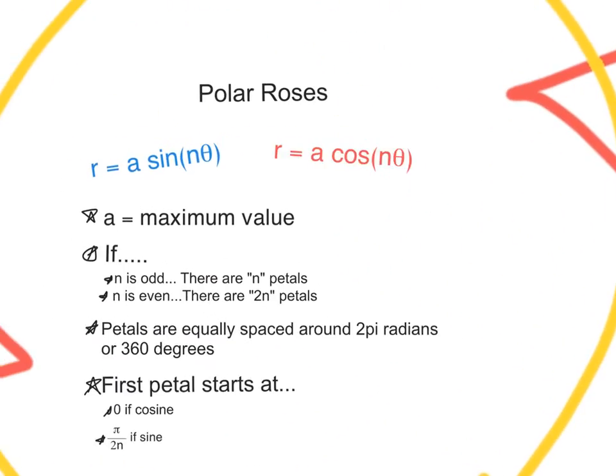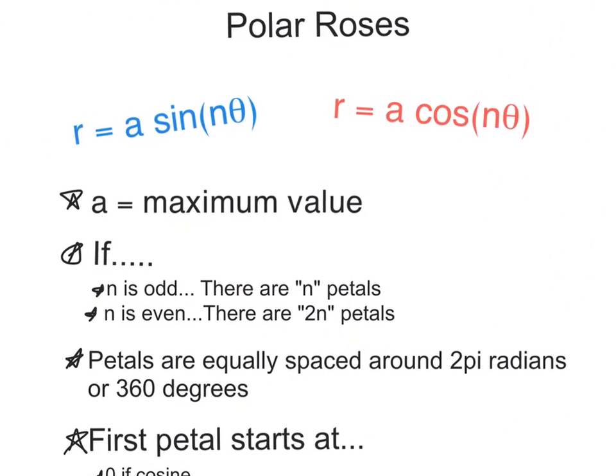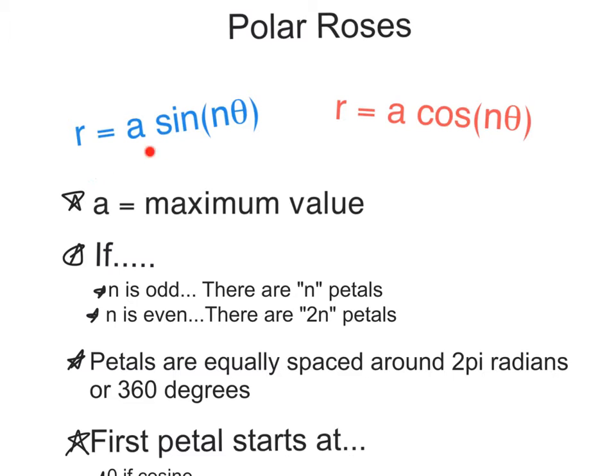Alright, so polar roses are going to be of the form either r equals a sine n theta, or r equals a cosine n theta. A represents your maximum value. If n is odd, then there are n petals. If n is even, there are two times n petals.